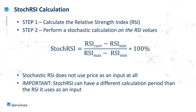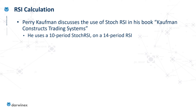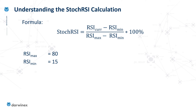We perform the stochastic RSI calculation looking back at a certain number of RSI values, and this is an important point: the stochastic RSI can have a different calculation period than the RSI it uses as input. For example, the RSI values could have been calculated on the basis of 14 periods, but the stochastic calculation could look back at the last 10 of those RSI values — RSI periods of 14, stochastic RSI periods of 10. I've used those values as an example because when Perry Kaufman discusses stochastic RSI in his book 'Kaufman Constructs Trading Systems,' those are the values he uses, and they will be my starting point for analysis as well.